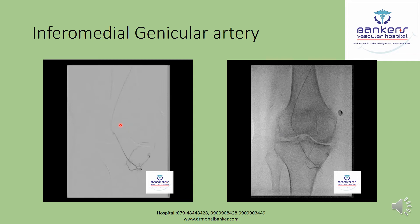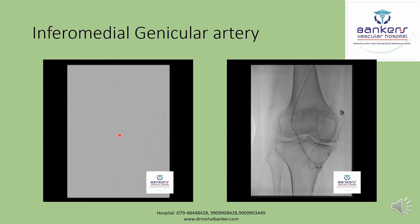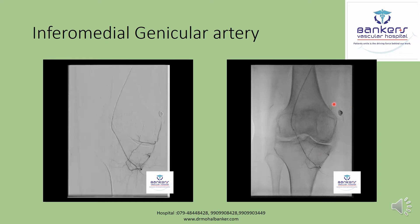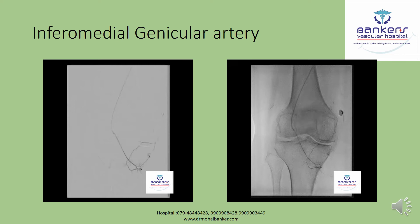The second genicular artery I assessed is the inferomedial genicular artery, which is typically a J-shaped artery. It supplies the lower part of the knee joint medially, but its blood supply does not reach the pain-producing site. Therefore, the inferomedial genicular artery is not the culprit artery producing cytokines at the site of pain.